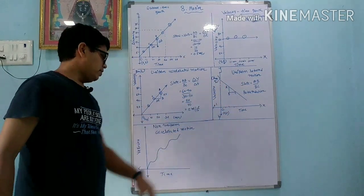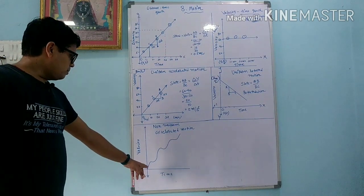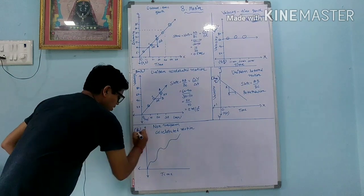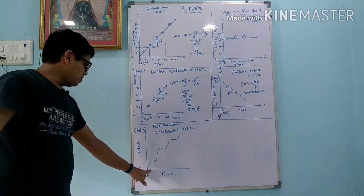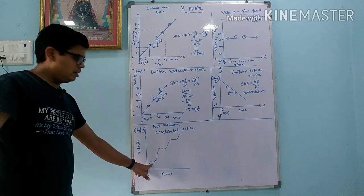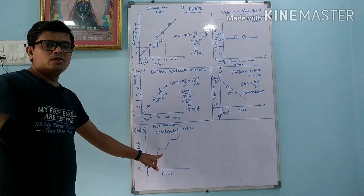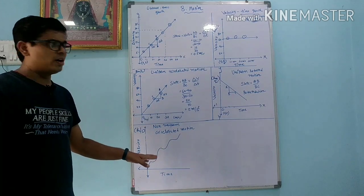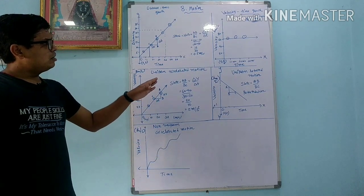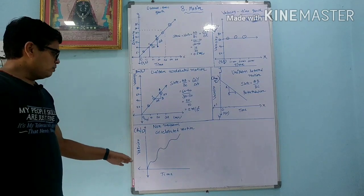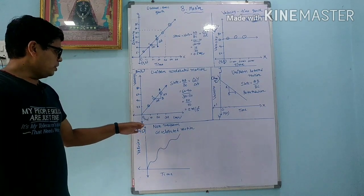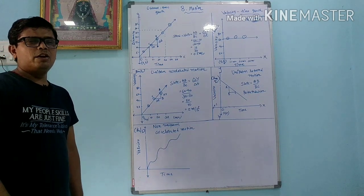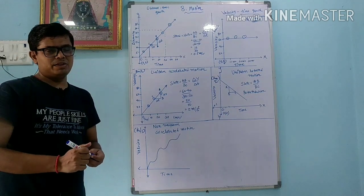In the velocity versus time graph for non-uniform motion, the velocity sometimes increases and sometimes decreases. In equal intervals of time, velocity does not continuously increase or continuously decrease — we get a zigzag type of graph. So it is called non-uniform accelerated motion. This is all about the application of graphs. If you have any problem, you can comment or send a message.